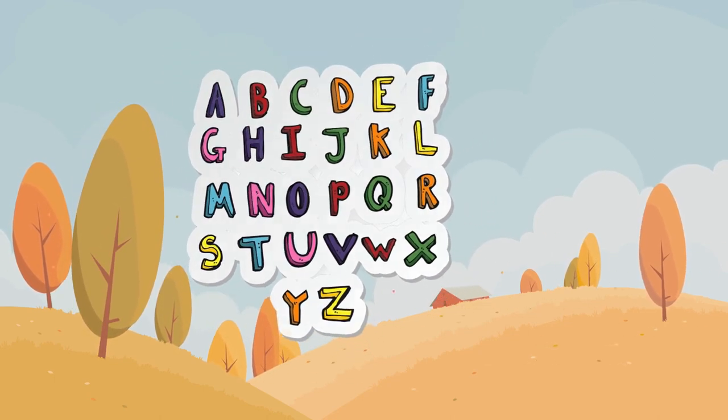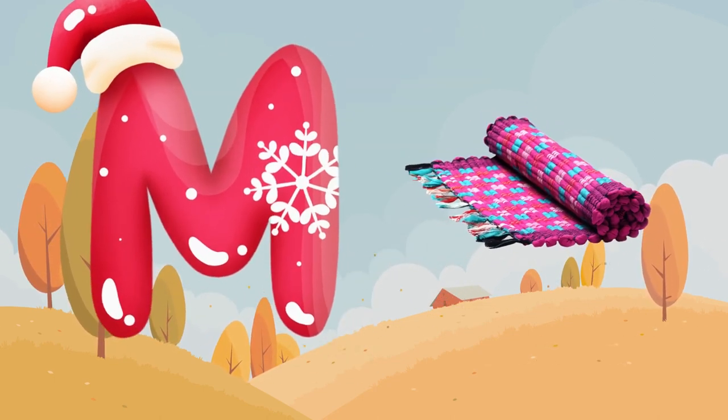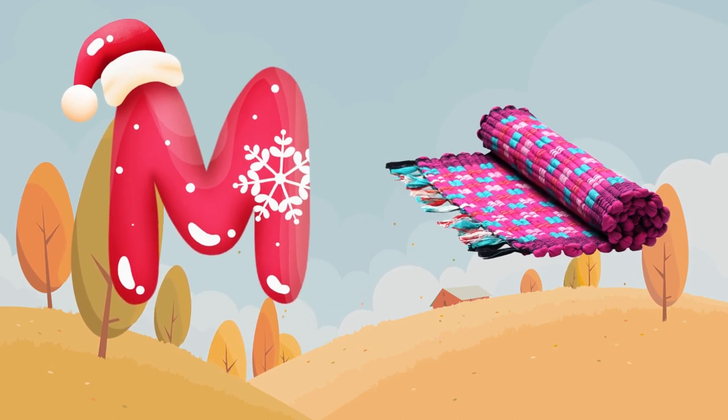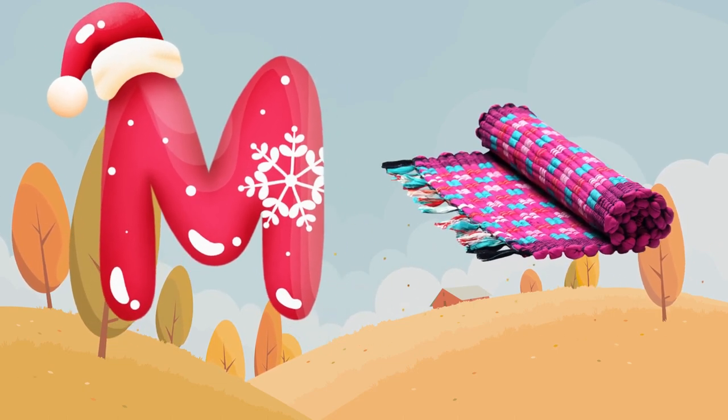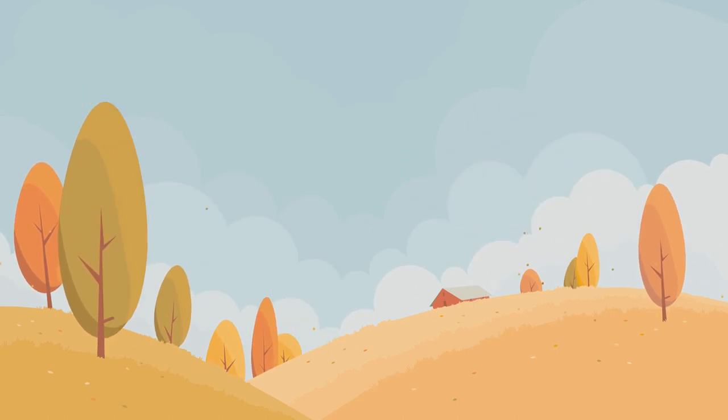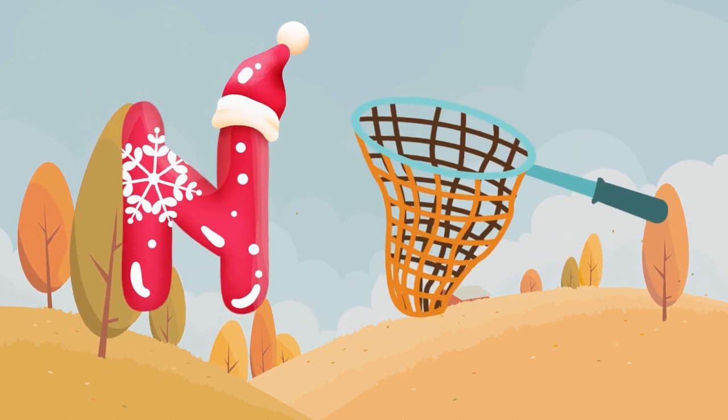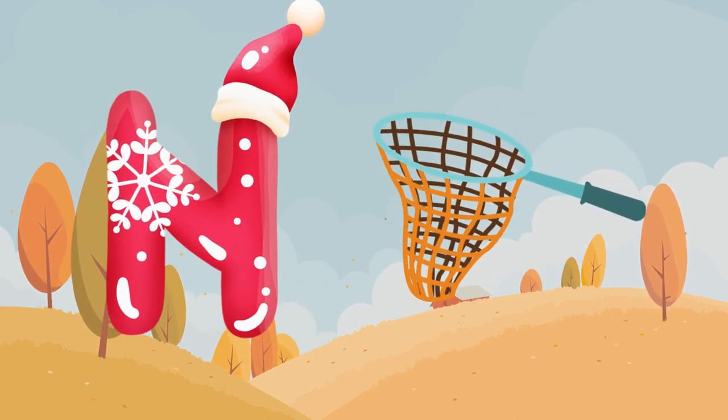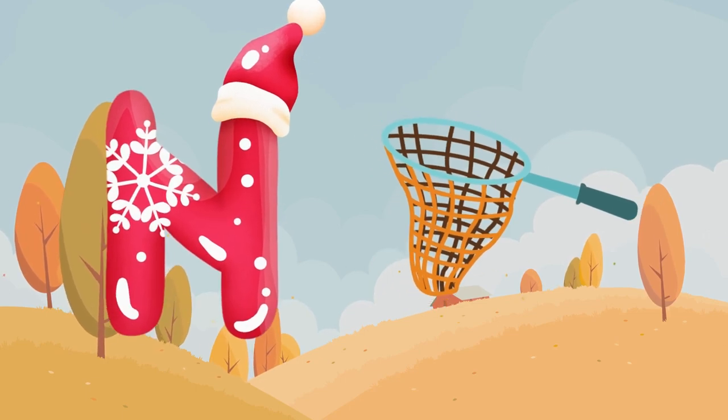M is for mat, m-m-mat. N is for net, n-n-net.